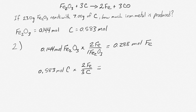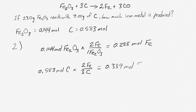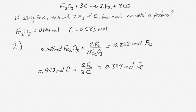We can make two irons for every three carbons, which means we can make a total of 0.389 moles of Fe. So we've done our two predictions.